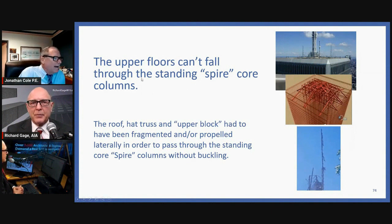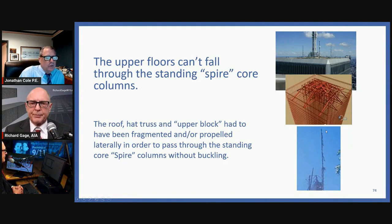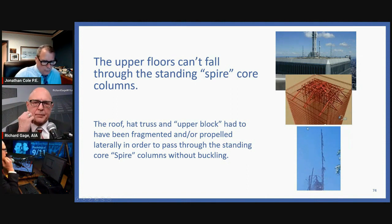Since the upper floors cannot fall through the standing spire core columns, the roof, hat truss and upper block had to have been fragmented and or propelled laterally in order to pass through the standing core spire columns without buckling. And it didn't buckle. So we know all the material above had to impose whatever force that was much less than the design capacity. It had to have been blown outward.